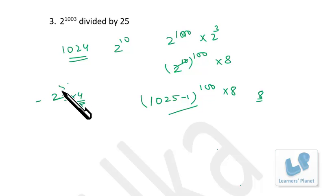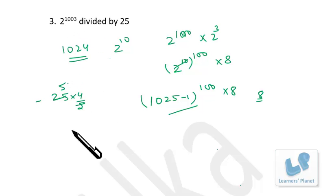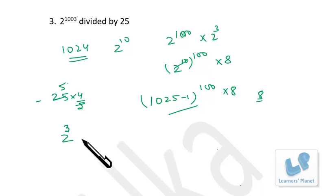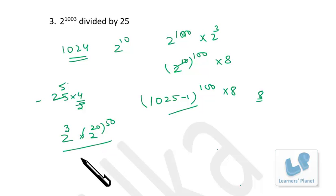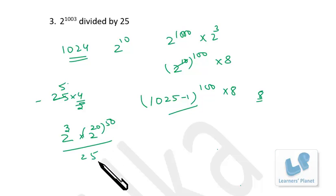Since 2 and 25 are co-prime to each other and the Euler number is 20, we can write 1003 as 3 plus 1000. I keep 2 raised to 3 aside and 2 raised to 1000, since 1000 is a multiple of 20 — 50 times. So the remainder of 2 raised to 20 divided by 25 is 1, and 1 raised to 50 gives a final remainder of 1.